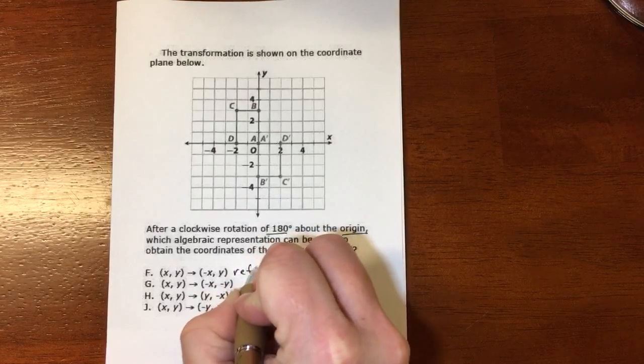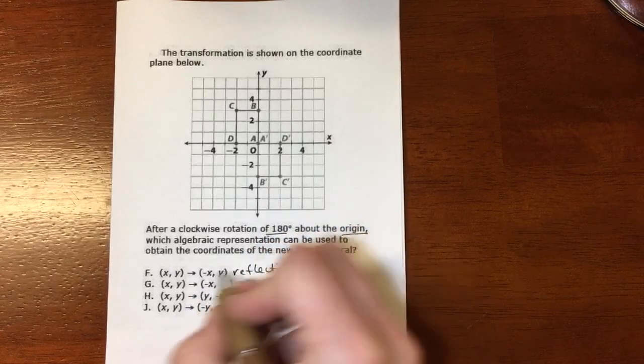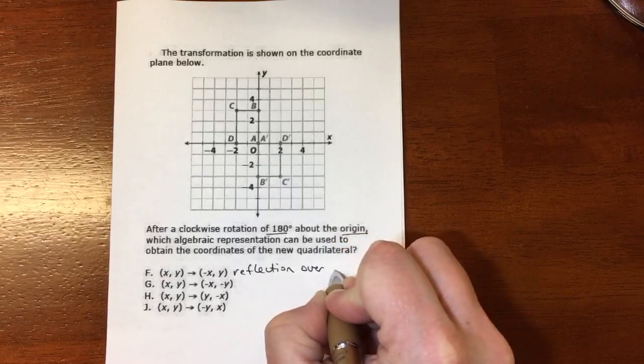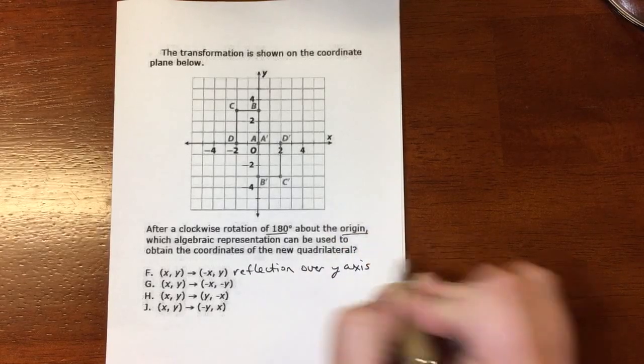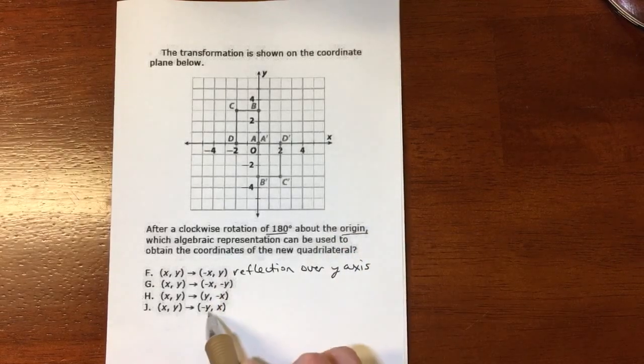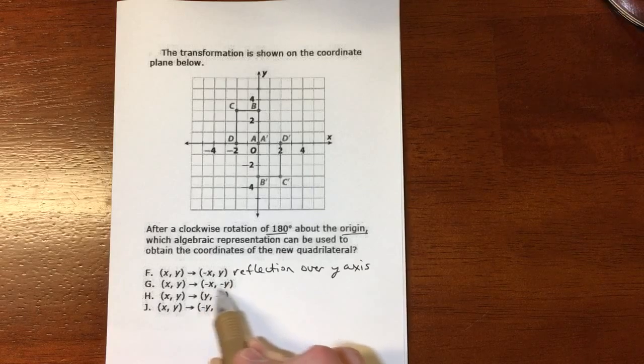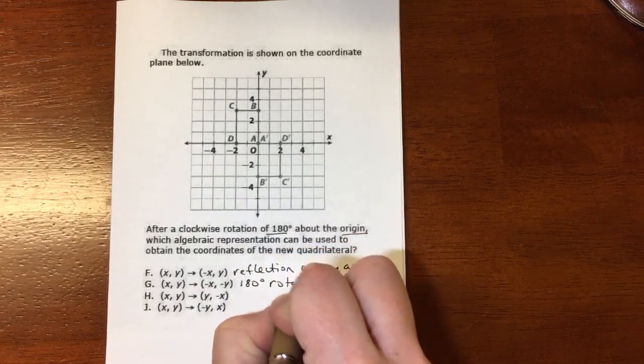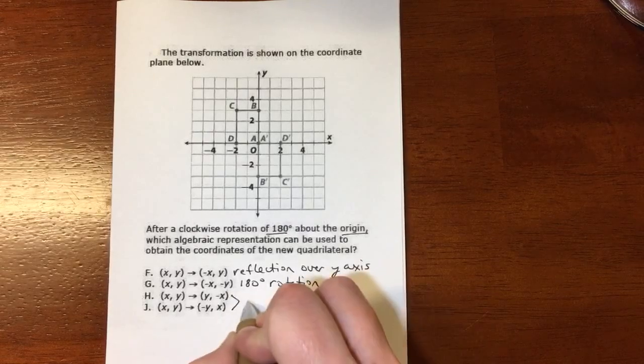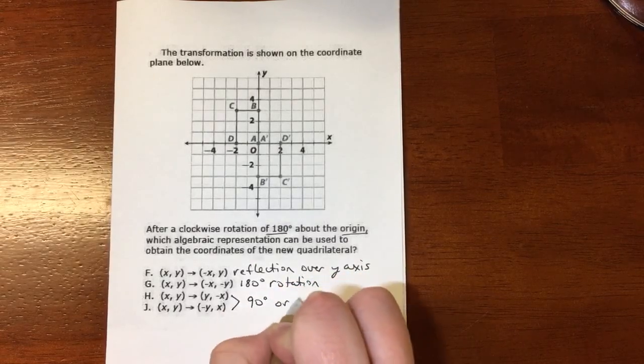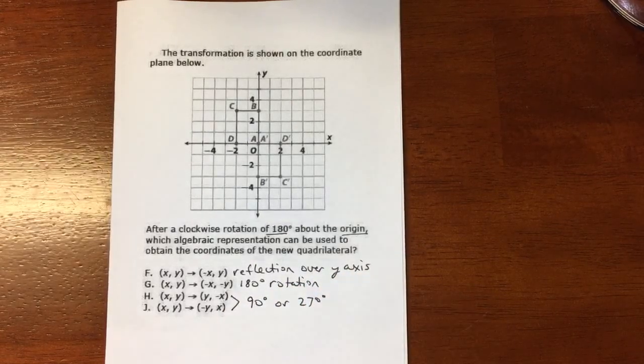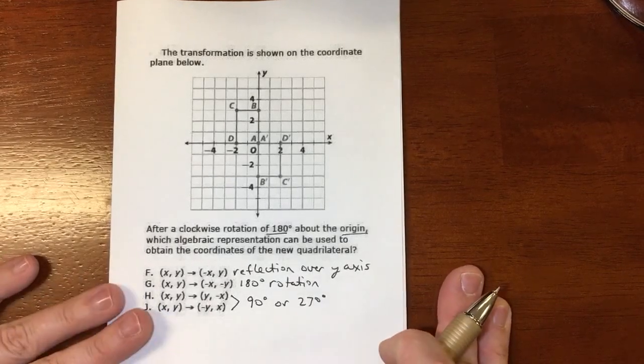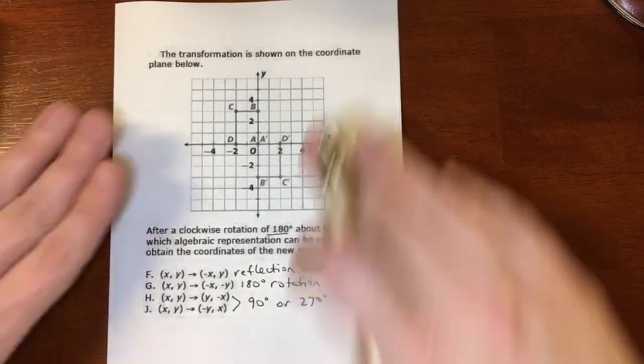Okay, well, I know this is a reflection because the X has changed opposite. So that's a reflection over the Y-axis because the Y didn't change. Okay, and I remember this is a 180-degree rotation. And I remember these are either 90 or 270, but I don't really remember those off the top of my head. So if you can't remember this, just pick some points and use these points.